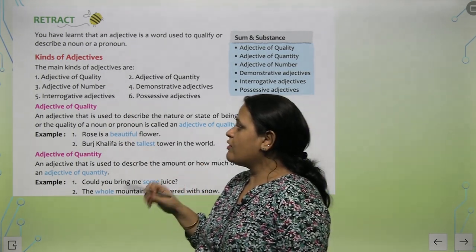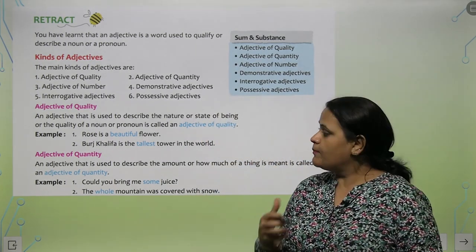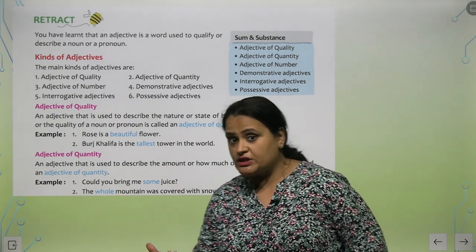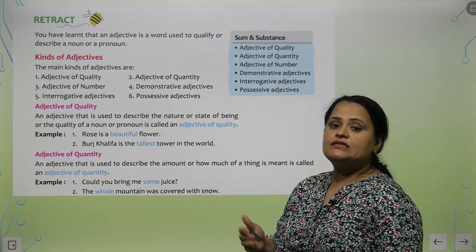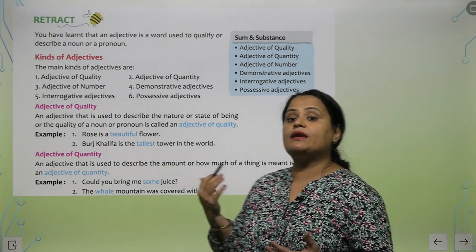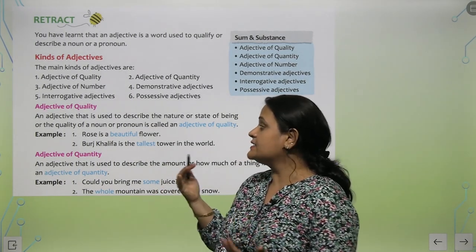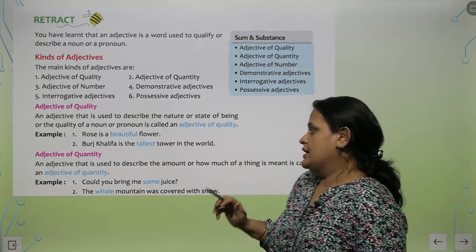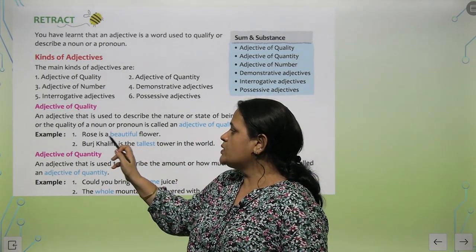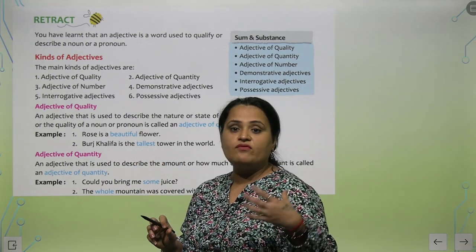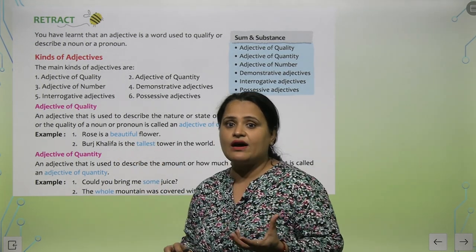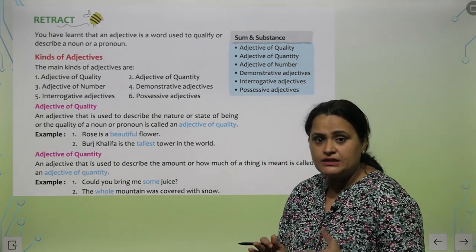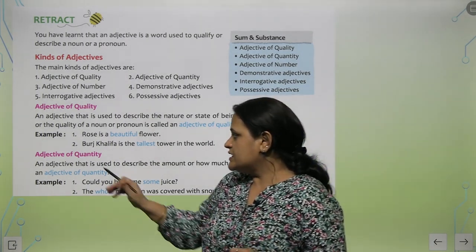Now I am going to start with adjective of quality. Naam se hi pata chal raha hoga — an adjective that is used to describe the nature or state of being, kya unka nature hai, kya quality hai kisi noun ya pronoun ki, is called an adjective of quality. Example: 'Rose is a beautiful flower.' Rose is a flower everyone knows, but rose kaisa flower hai? Rose is a beautiful flower — so 'beautiful' describes the quality of rose.